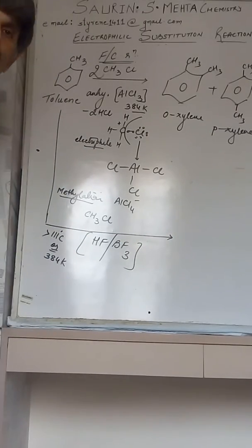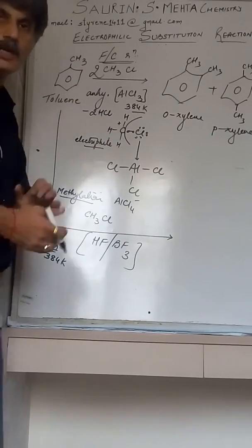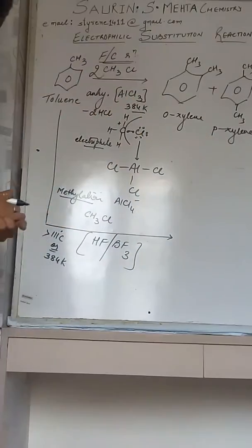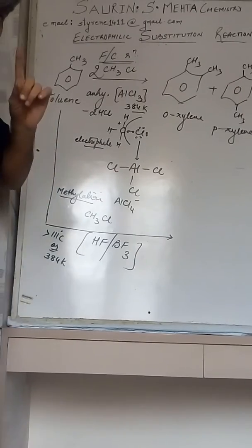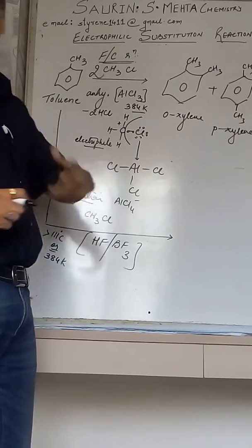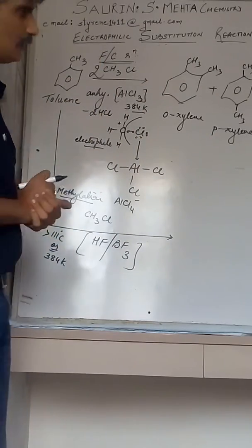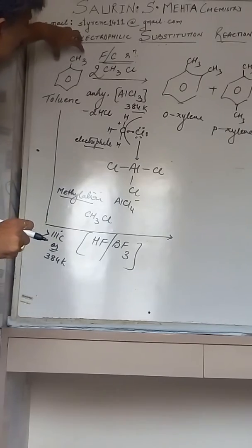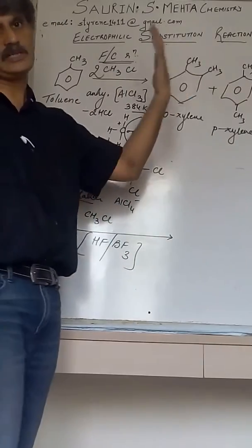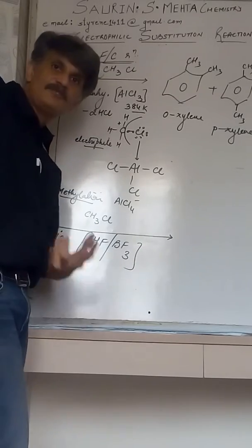And as you introduce this catalyst in the reaction of toluene, the whole scenario changes. Now we have repeatedly talked about the existing group having its directive effect. We all know very well methyl group is electron donating group and so it is an OP directing group. But now HF-BF3 reagent is such where you have fluorine, the highest ever electronegative element in the whole periodic table.